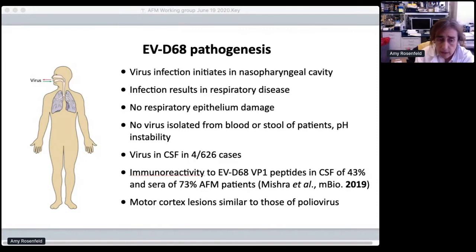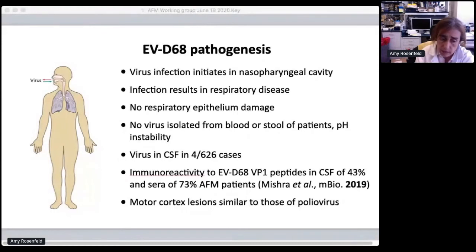The strongest evidence that EV68 is a neurotropic pathogen comes from two bodies of work: one by the Lipkin group here at Columbia, where they identified a specific antibody to the C-terminal portion of VP1, which was subsequently supported by work by the Wilson group at UCSF. Upon radiological scans of children who developed AFM following EV68 infection, the motor lesions observed look very similar to those of polio.